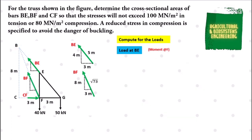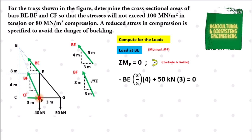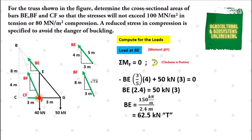Next, we solve for the value of load at BE by taking a moment at point F. Summation of moment at F equals 0, with forces in the clockwise direction positive. We have: negative BE multiplied by its slope of 3/5, multiplied by its distance from F of 4, plus 50 kN multiplied by its distance from F of 3 meters, equals 0. We use the X component over the hypotenuse when taking the moment of force. Transposing: BE times 2.4 equals 50 times 3, giving 150 kN-m divided by 2.4 m. The answer is 62.5 kN. BE is in tension since its direction is going away from point E.